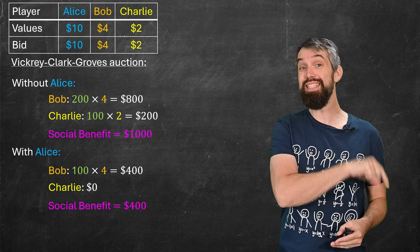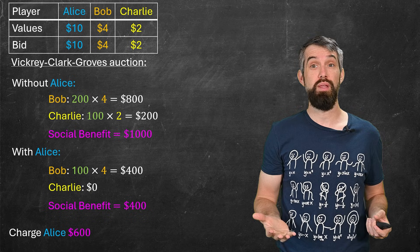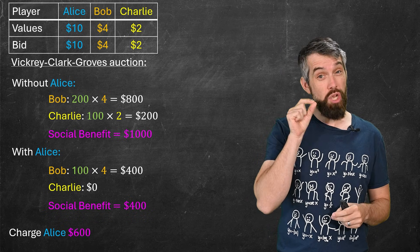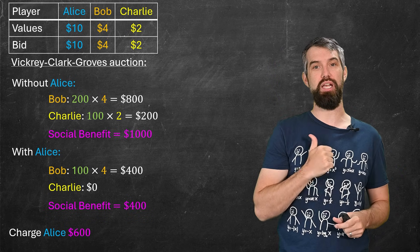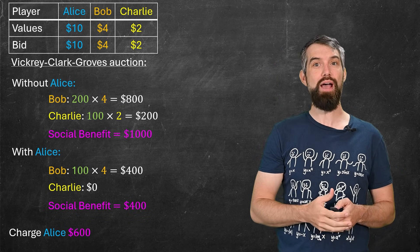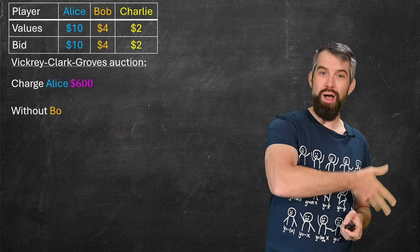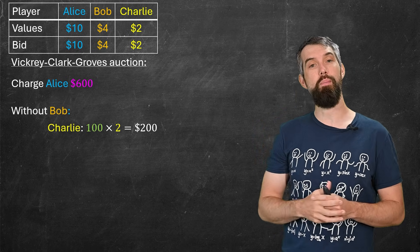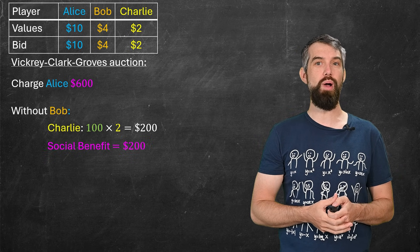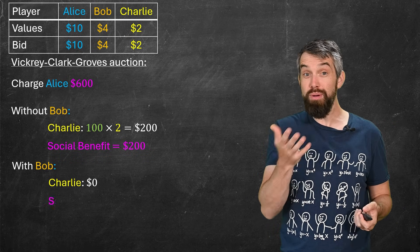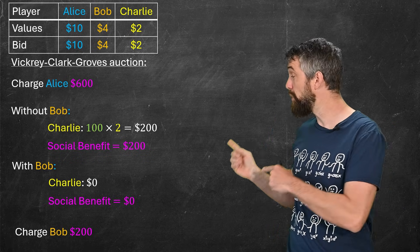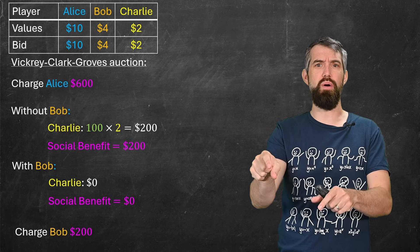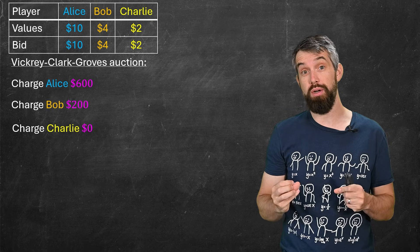So Alice, in a sense, has cost everybody $600. It's the $1,000 they would have made if Alice wasn't there, but subtract off the $400 they made with Alice being there. Alice has cost them $600. So let's charge Alice $600. And then similarly, if we've done that, what should we do for Bob? Let's do the two scenarios. If Bob wasn't there, then what would Charlie make? Charlie would get the second spot at $100 times the $2 per click, $200. And so a social benefit of $200. And with Bob, well, Charlie makes nothing, a social benefit of $0. So how much should we charge Bob? Bob should be charged the $200 that cost Charlie. So you're always paying the harm that you caused to the other people. Charlie doesn't get a slot at all, and so Charlie should be charged $0.